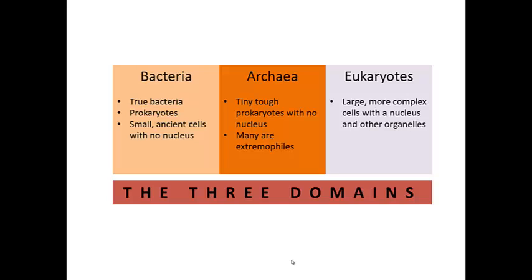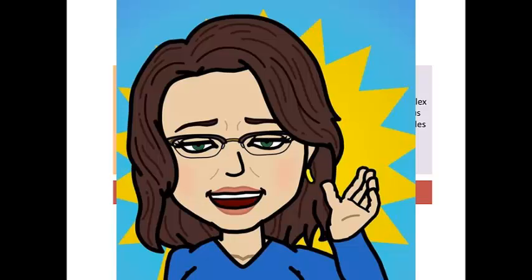And then the last domain is the eukaryotes. This is where you fall. You are a eukaryote. Your cells are large and more complex, with a nucleus, and cells also have organelles. Okay, that's a wrap. I'll see you in the next video. Ta-ta!